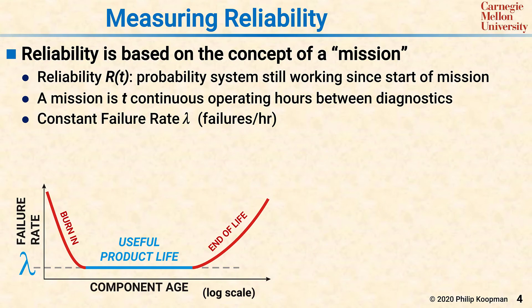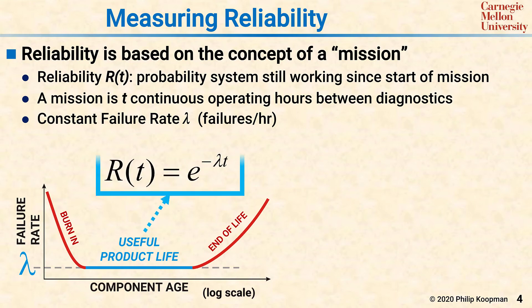At some point, components wear out and need to be discarded or replaced because their lambda is no longer the lambda you used for your reliability equations. Considering only the flat part of the curve, we come up with an equation that gives the useful product life reliability. Because we assumed that failures were random and independent, we can use an exponential form to predict reliability.